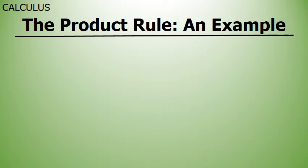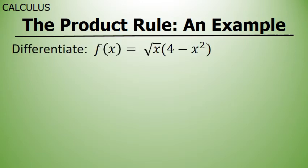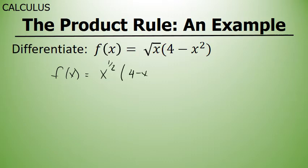In this example, I'm going to use the product rule to differentiate the function f of x equals the square root of x times the quantity of 4 minus x squared. In this function, I'm going to consider the first factor, the square root of x, or x to the 1 half, and the second factor, 4 minus x squared.